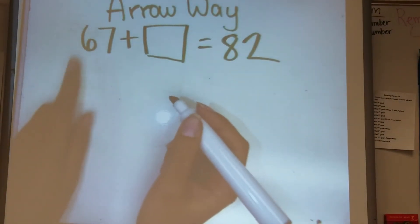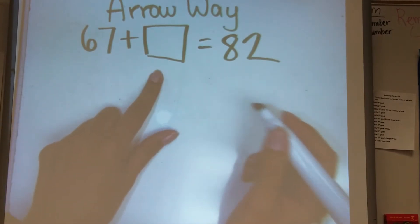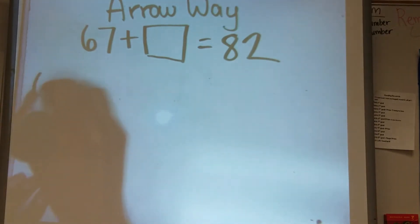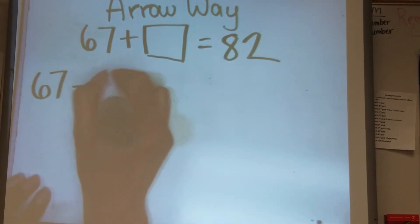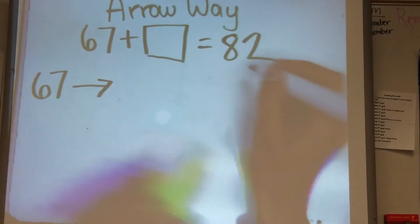What we are going to do here is we are going to add to get 82. So we would start at 67, draw our arrow, and what we need to do is make sure that we have the 80 and 2.